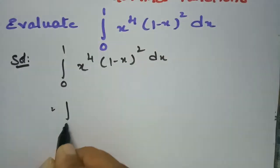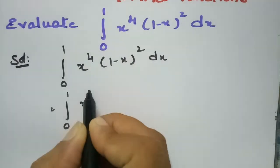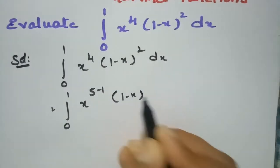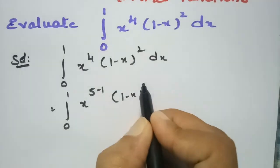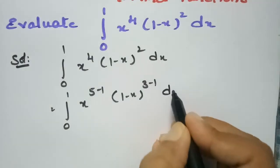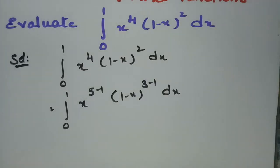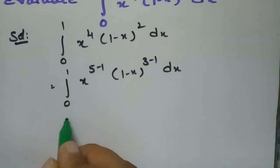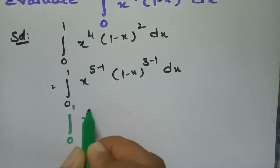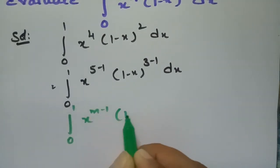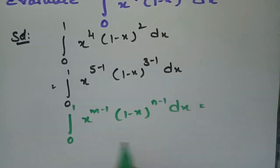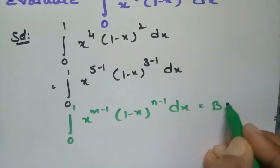We can rewrite this as x to the power (5 minus 1) into (1 minus x) to the power (3 minus 1) dx. If you observe carefully, this is of the form integral 0 to 1 of x^(m-1) into (1 minus x)^(n-1) dx, which is nothing but the beta function.